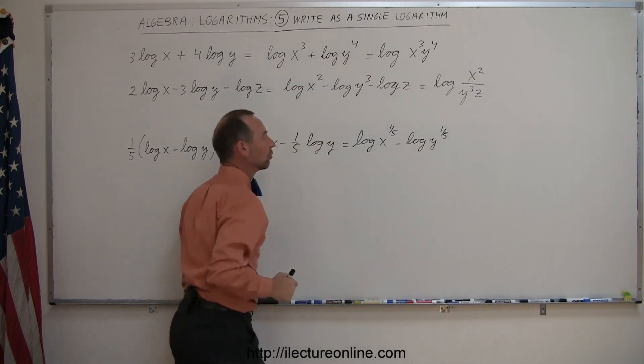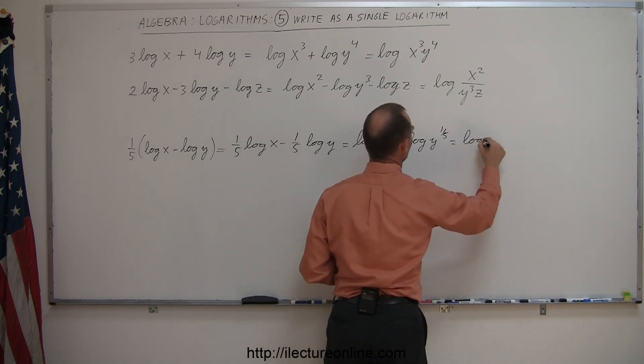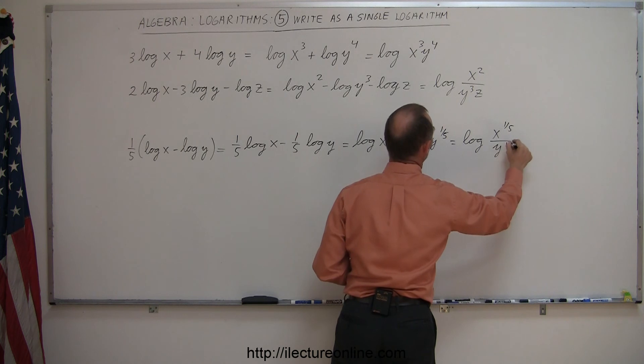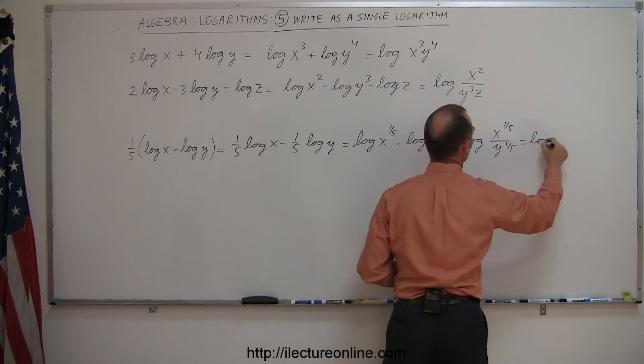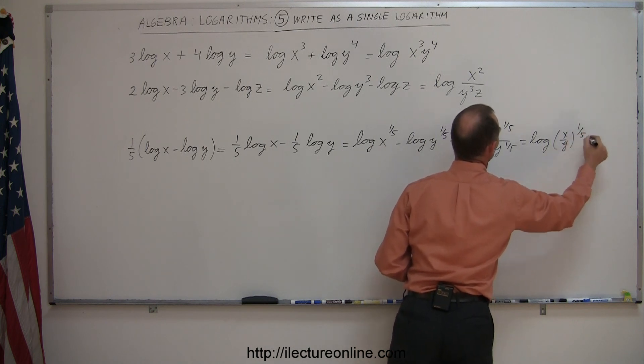Now again, we use the rule that when we subtract, we can write as a fraction, so this equals the log of x to the 1/5 divided by y to the 1/5. You could potentially write this as the log of the quantity x over y to the 1/5 power.